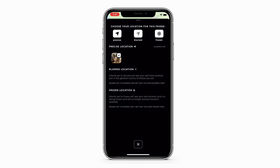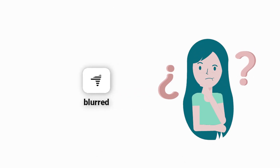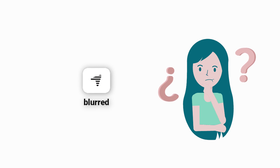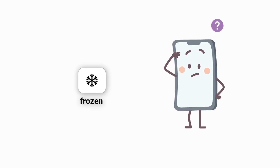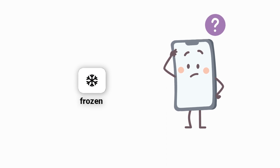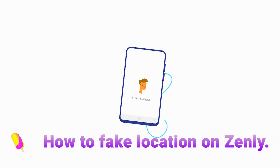It is undoubtedly a simple way, but it is worth mentioning it leaves some flaws for suspicion. The blurred option would be found by your friends, as they can see that you have blurred them. The frozen option would raise suspicion that your phone's internet connection is off or your phone is shut down.